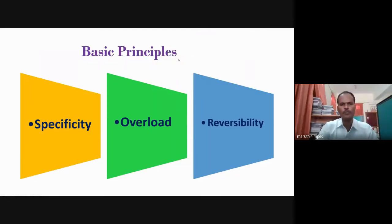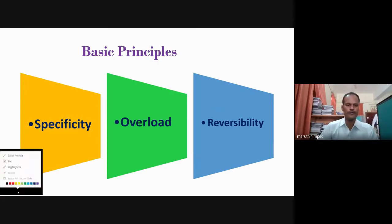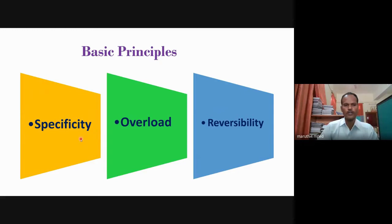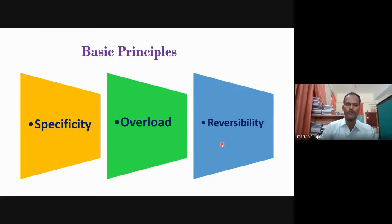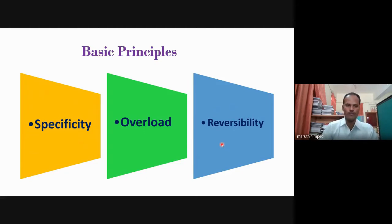Now, we are going to talk about basic principles of sports training. Basic principles are divided into three titles: one is specificity, second one is overload, and third one is reversibility. We should understand these three concepts so we can easily apply them whatever type of training we want to give and whatever athletes we are going to handle.